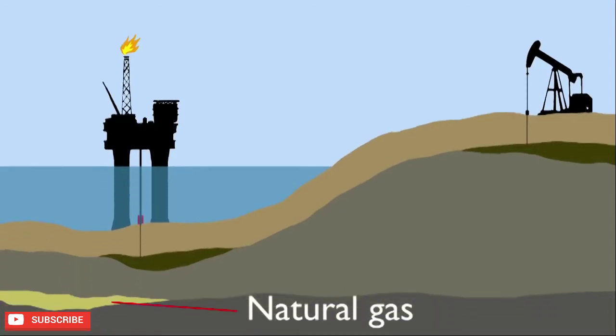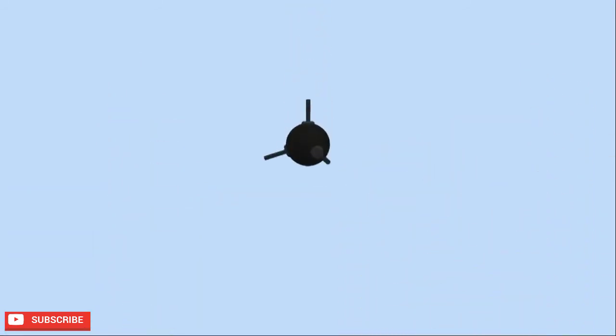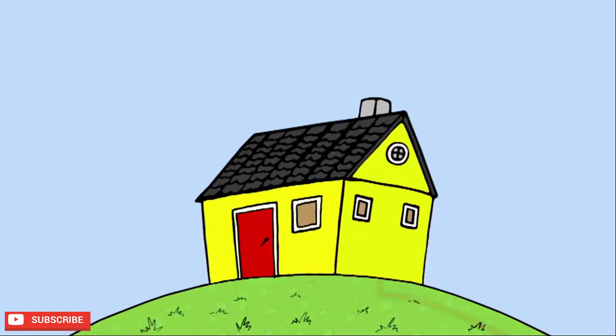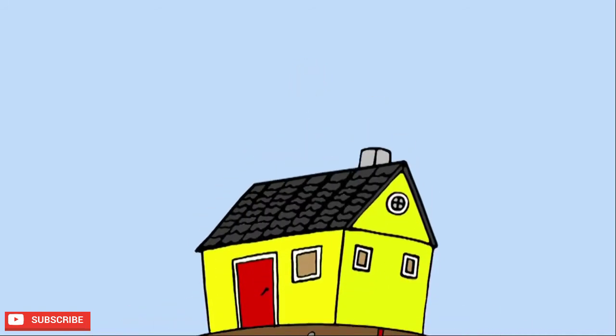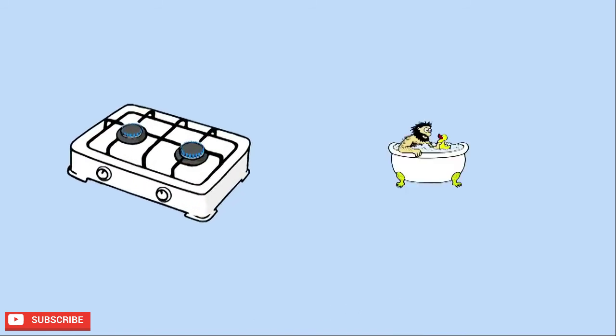Natural gas is often found with oil, trapped between layers of rock. It is mainly methane and is frequently used in our homes, piped underground to be used for cooking and heating our water.